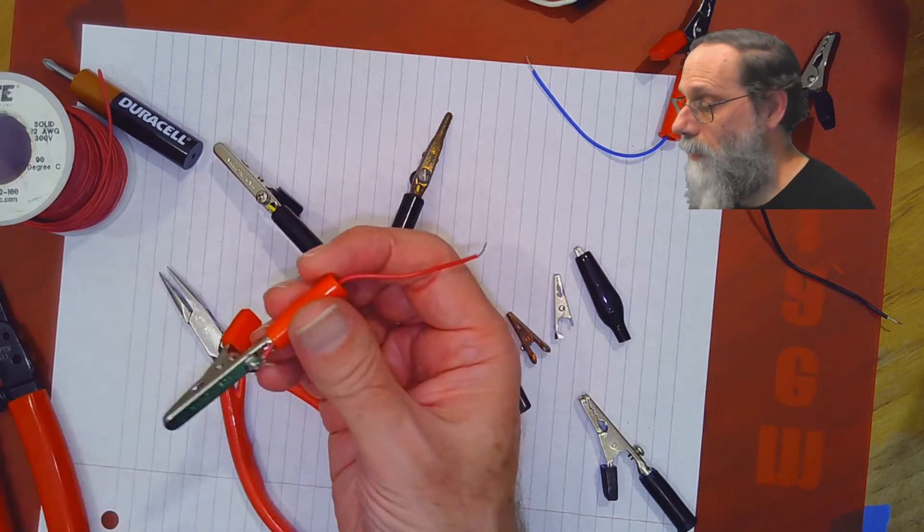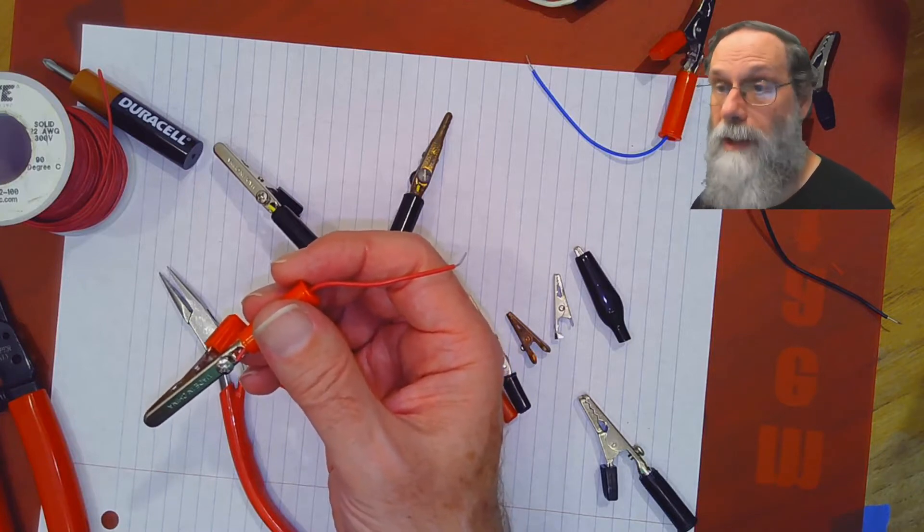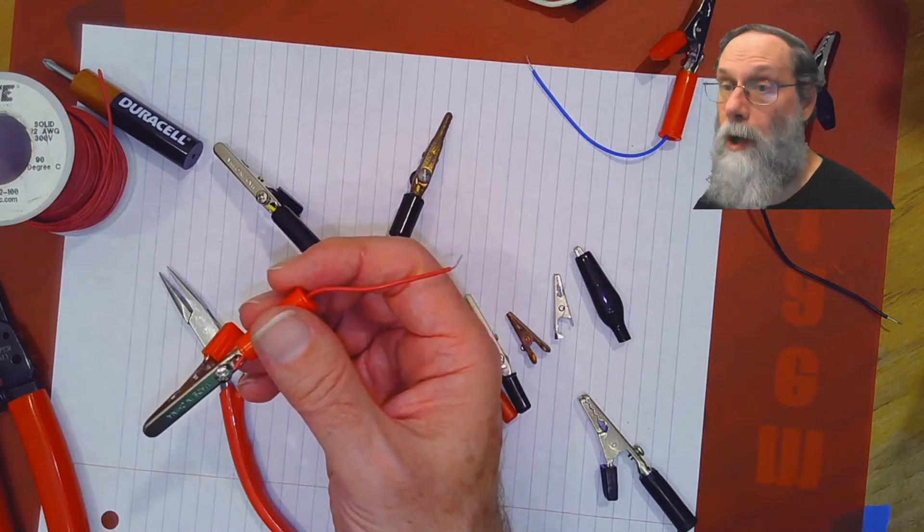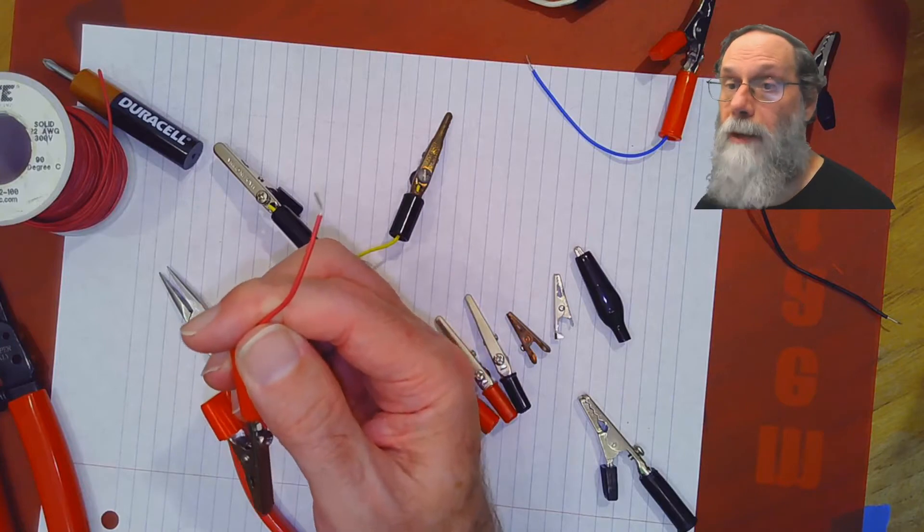Alligator clips like this are very useful for connecting up components that don't fit in a breadboard because they're too large and making a wire that fits into a breadboard.